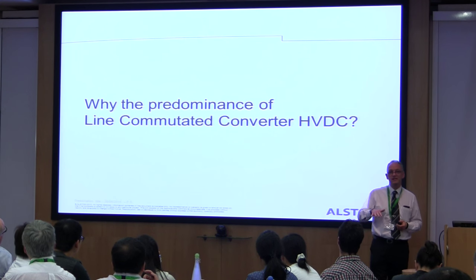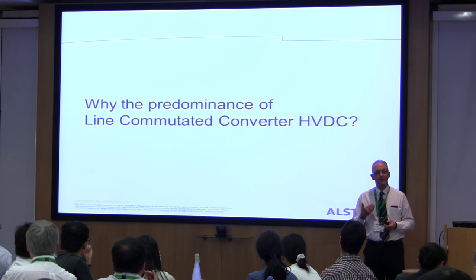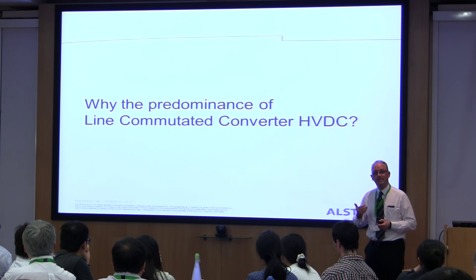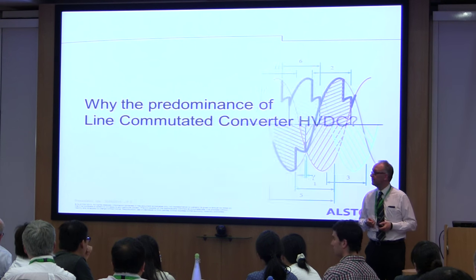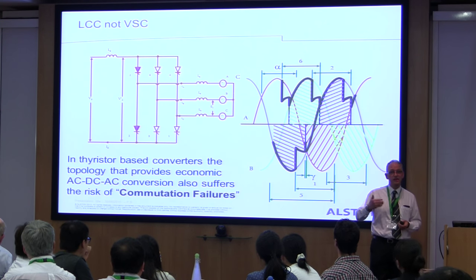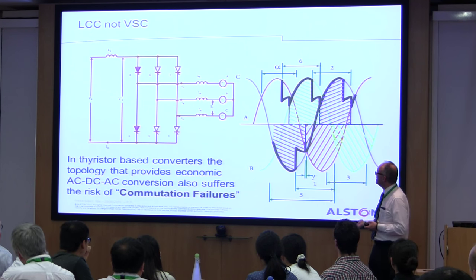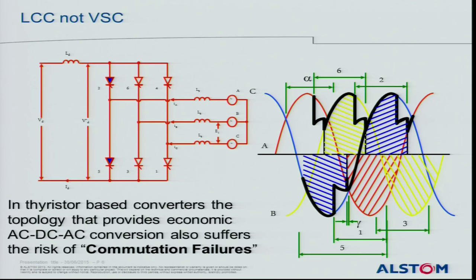To understand voltage source converters and their rapid growth, we need to understand the history and why to date it has been line commutated converters. The early available technology was mercury arc and then thyristors. Thyristors, formed as a six-pulse bridge, carry a risk of commutation failure — a short through the bridge causing a collapse in DC voltage because two thyristors fire at the same time.